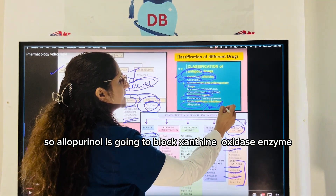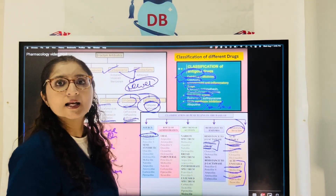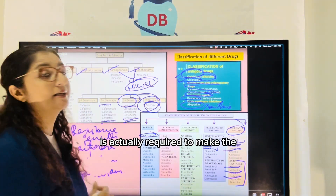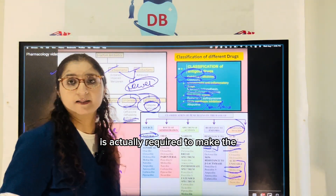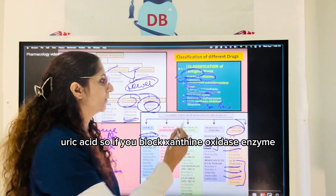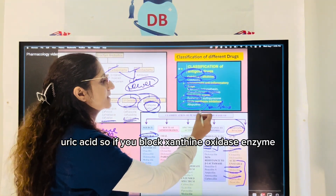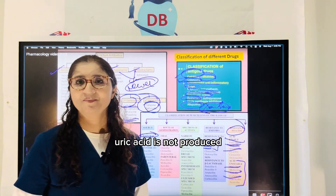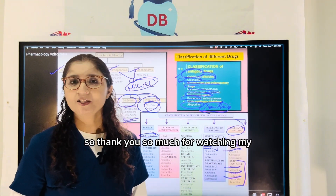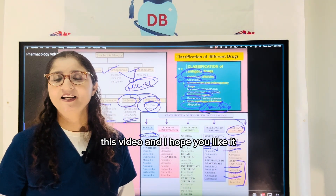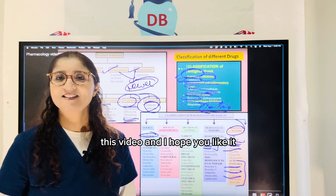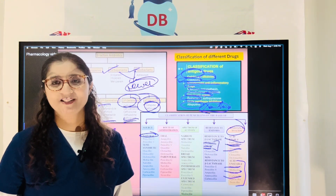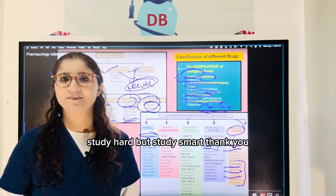The last commonly used drug is allopurinol, which blocks the xanthine oxidase enzyme. Since xanthine oxidase is required to make uric acid, blocking it prevents uric acid production. Thank you for watching. Please subscribe to my channel on YouTube — study hard but study smart.